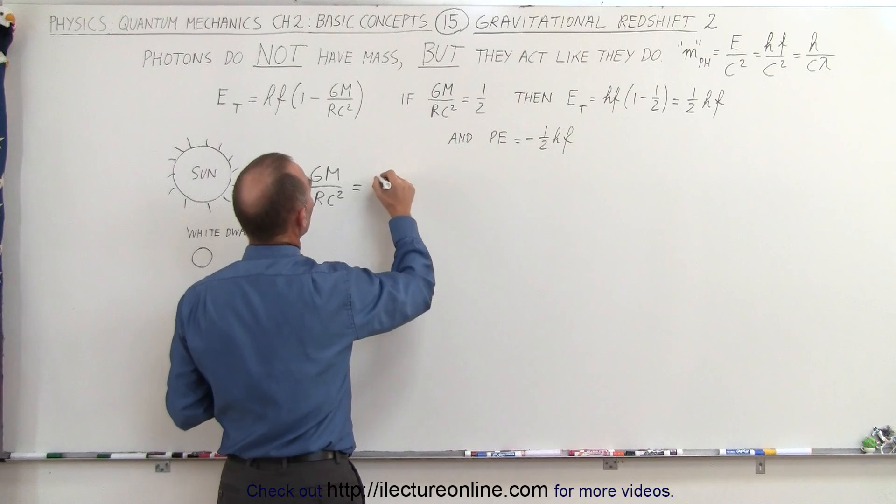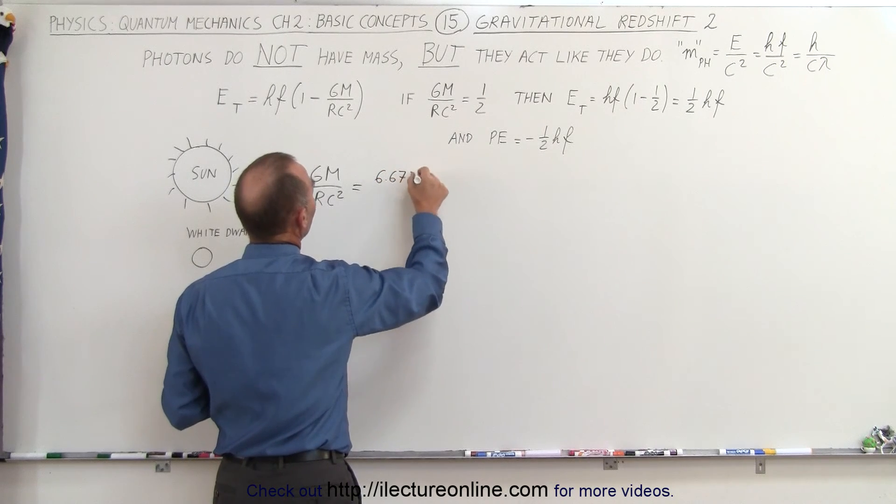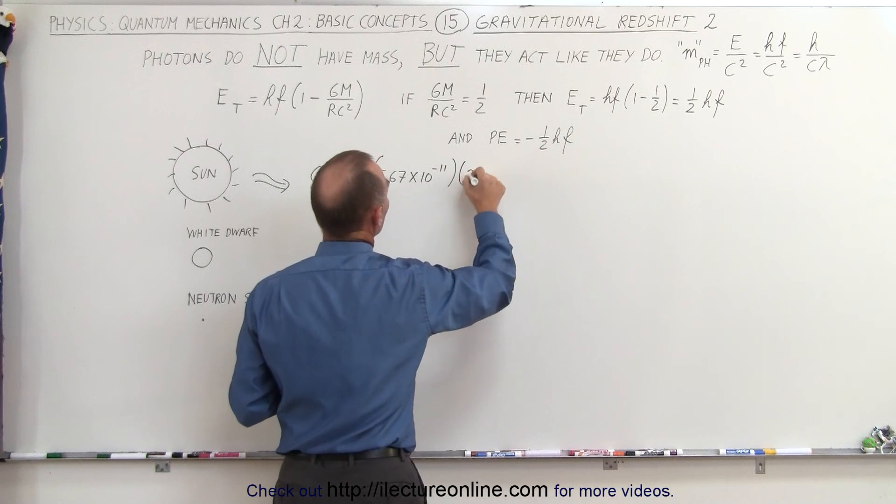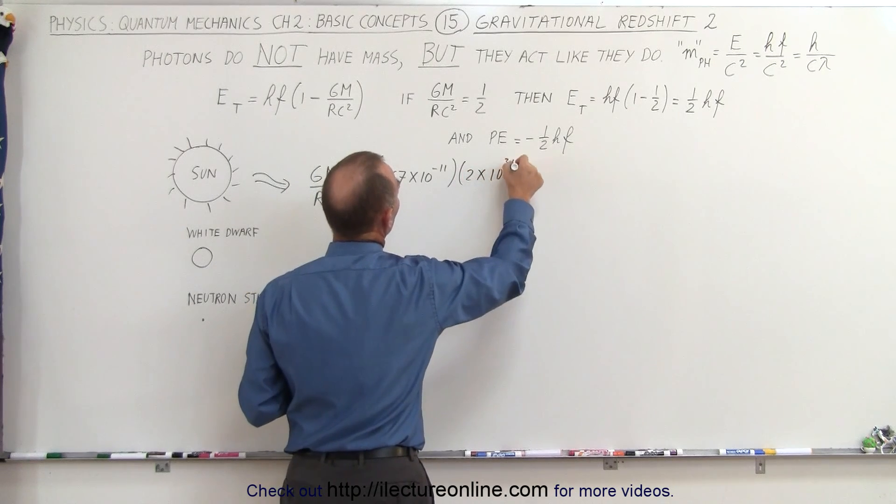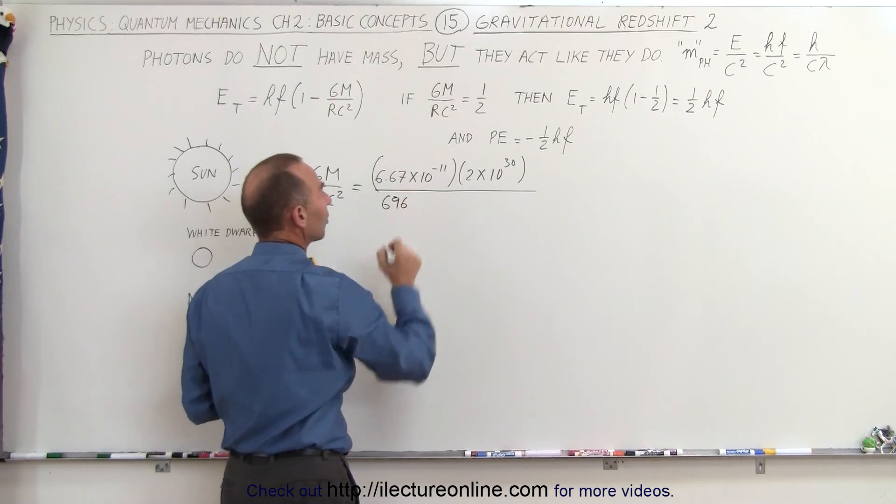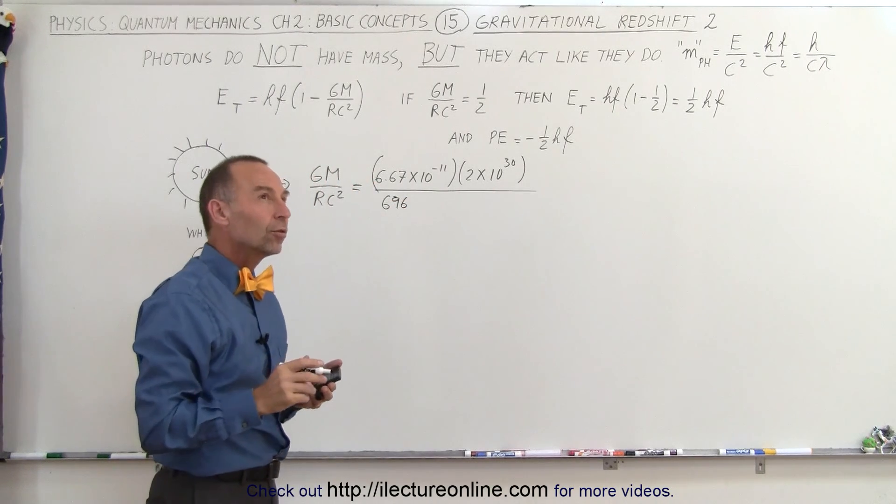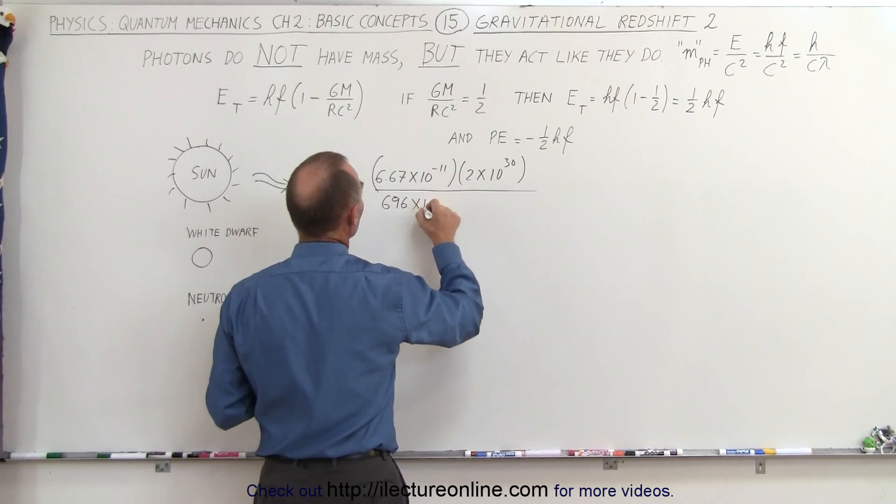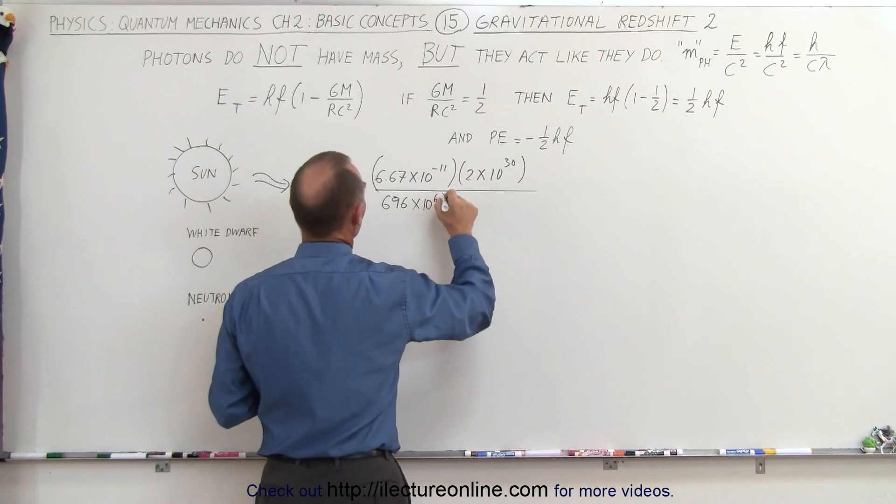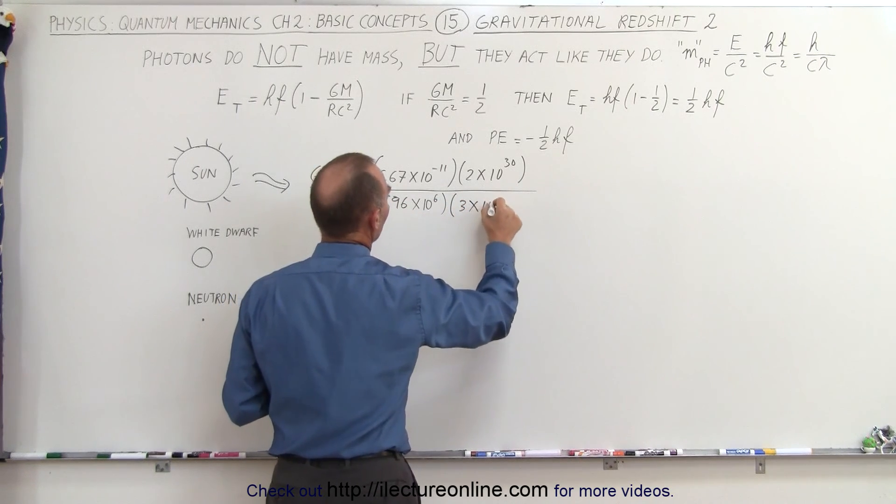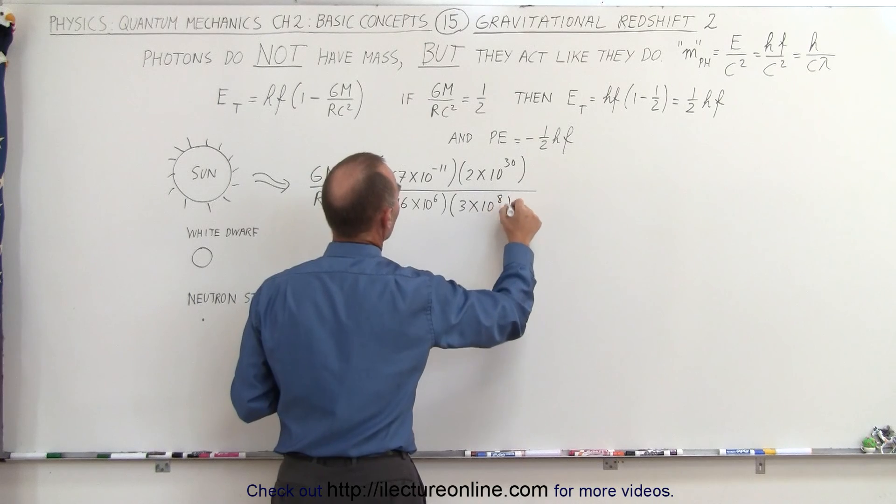G is 6.67 times 10 to the minus 11, M is the mass of the sun, 2 times 10 to the 30th, divided by the radius of the sun, which is 696,000 kilometers, times 10 to the 6th, and multiply that times the speed of light squared, 3 times 10 to the 8th quantity squared.